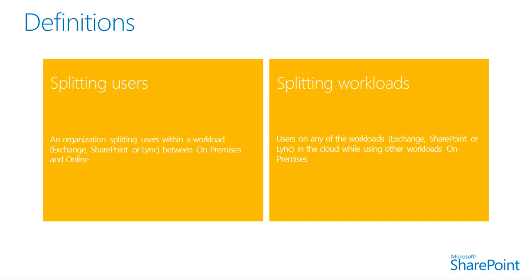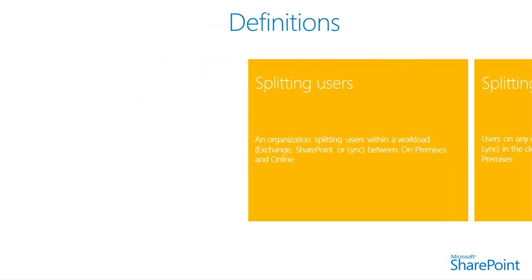Hybrid cloud can mean the ability to connect co-location, managed, and dedicated services with cloud resources. In the context of Office 365, hybrid cloud is characterized by workloads such as Exchange, SharePoint, or Lync that are deployed in the cloud in coexistence with the same or any other workloads on-premises. For example, SharePoint Online with SharePoint on-premises and Exchange on-premises. There are two basic types of hybrid deployments: hybrid within a workload, such as SharePoint Online and SharePoint Server side-by-side deployments, and hybrid between workloads, such as SharePoint Online working with Lync Server enabling presence.